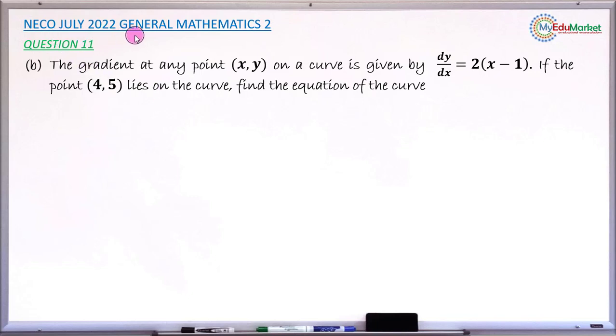This is the NECO July 2022 General Mathematics Paper 2 and we are answering question number 11b. The question says the gradient at any point (x, y) on a curve is given by dy/dx equals 2 into (x minus 1).